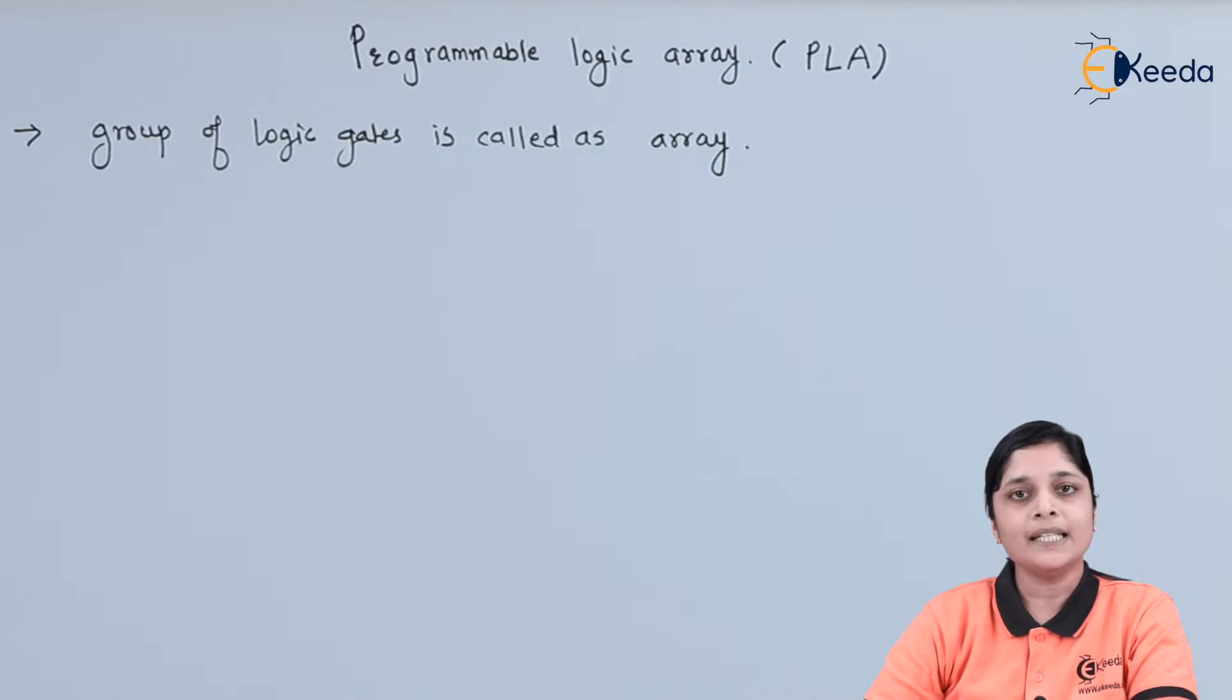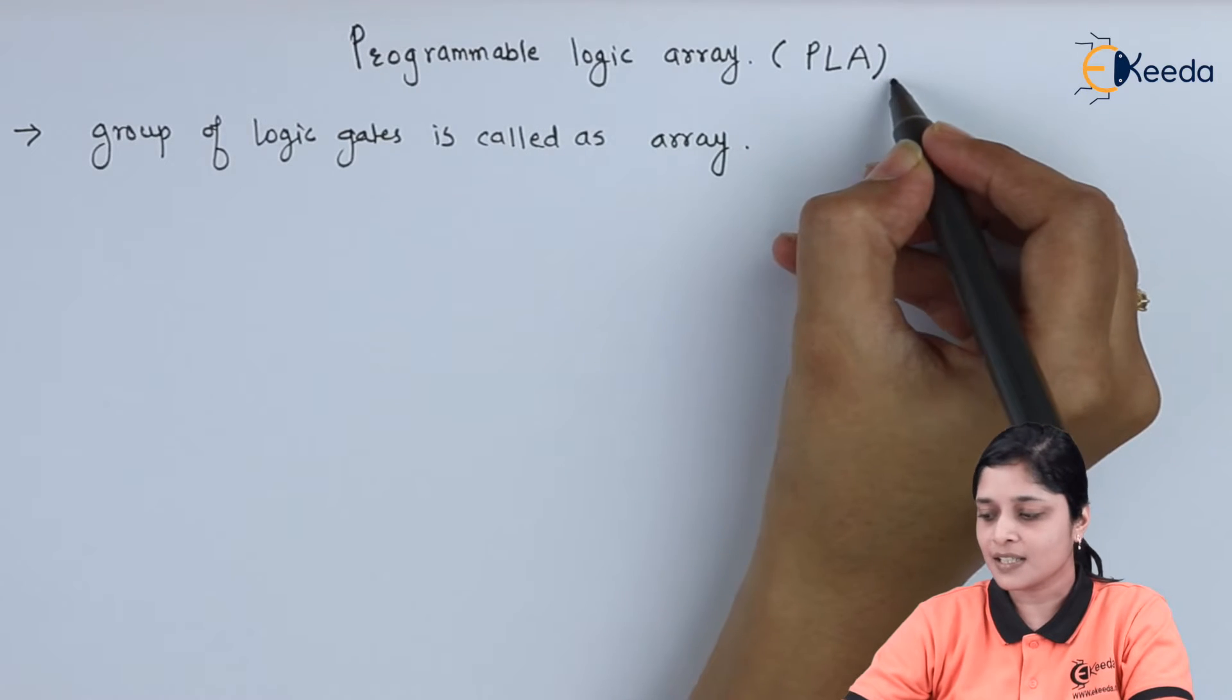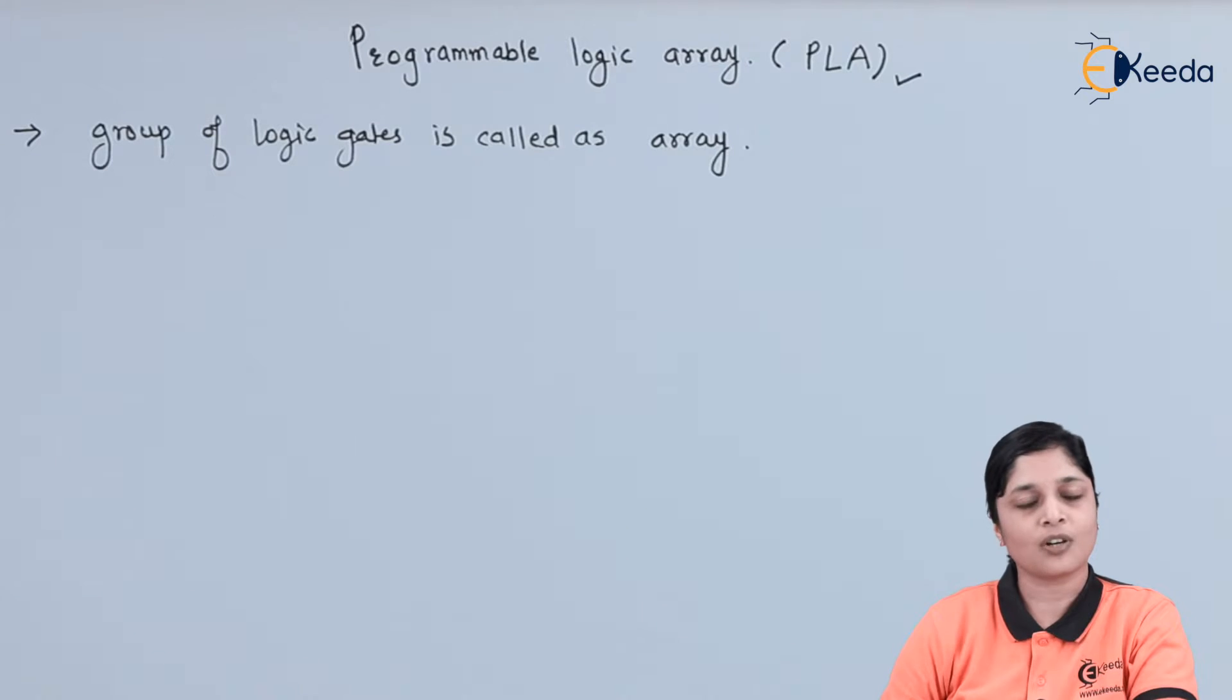Now, PLDs are again divided into what? First is PLA, that is Programmable Logic Array. Second is PAL, third is CPLD and fourth is FPGA.